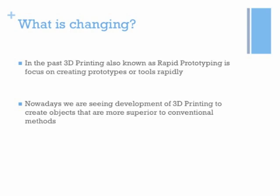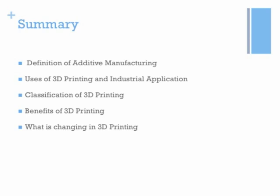To summarize episode 1: I introduced 3D printing by stating the definition of additive manufacturing according to the ASTM standard. I then talked briefly about the uses of 3D printing and industrial applications related to it. I mentioned how to classify 3D printing methods based on material input, discussed the benefits of 3D printing, and finally covered what is changing in 3D printing and why it is getting so much attention currently.